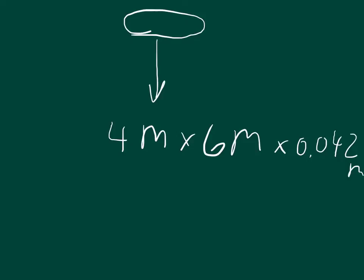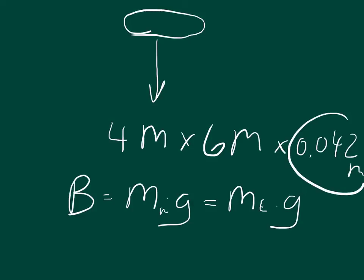And so the principle of buoyancy says that there will be a buoyant force. The buoyant force will be equal to the mass of the water times gravity. And so the mass of the water times gravity must be equal to the mass of the truck times gravity whenever it sinks down 0.042 meters.